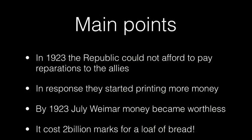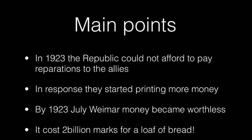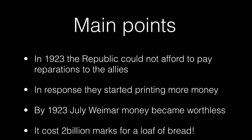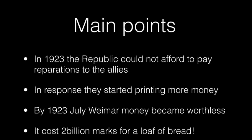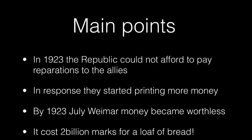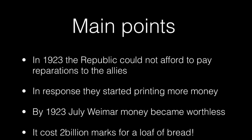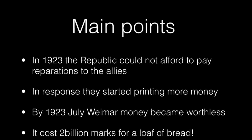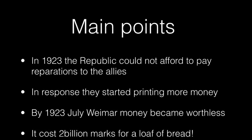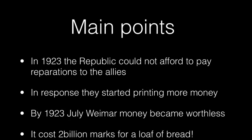People were reduced to trading with each other — bartering and swapping goods — so you'd swap some potatoes for some coal for your fire. In 1923, because the Republic could not afford to pay reparations, they started to print more money and it became worthless. The economy collapsed, and that's when the French and the Belgians invaded the Ruhr, which we looked at in the previous tutorial.